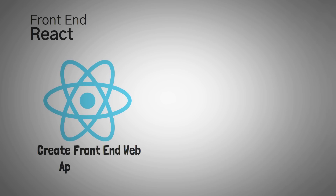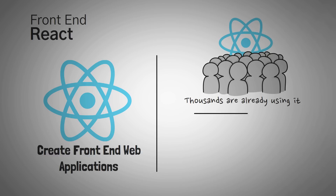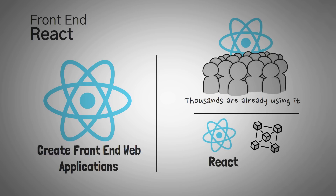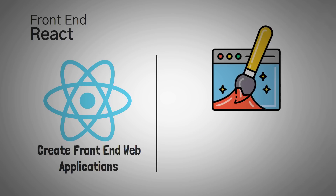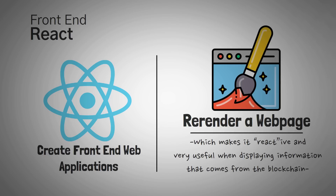The next two things are for building frontends. These are just regular Web2 tools that anyone can use to build a Web2 website. React is a JavaScript framework that allows us to create front-end web applications — basically a website. React is a very powerful Web2 framework that tens of thousands of developers already use. Combining React with Web3 is very easy, which is why it's the language of choice for most projects in my Web3 bootcamp. React has the ability to re-render a web page based on state changes, making it very useful when displaying information that comes from the blockchain, which may change often.